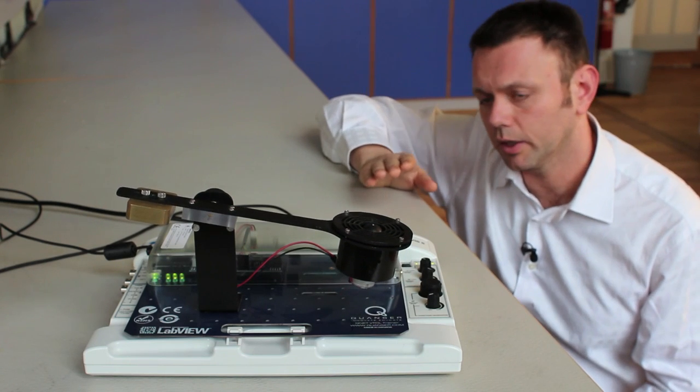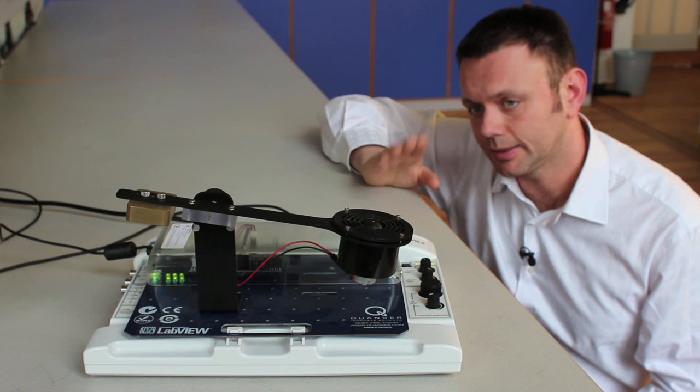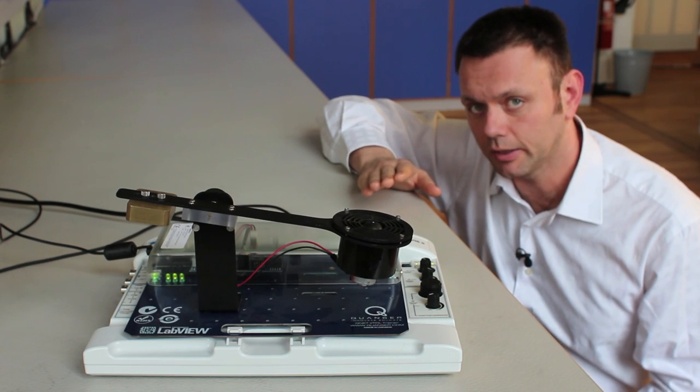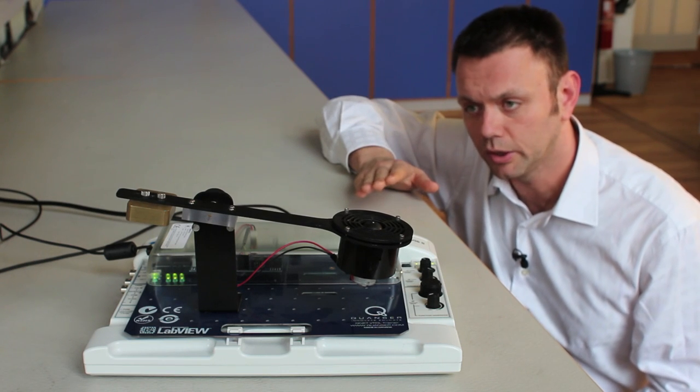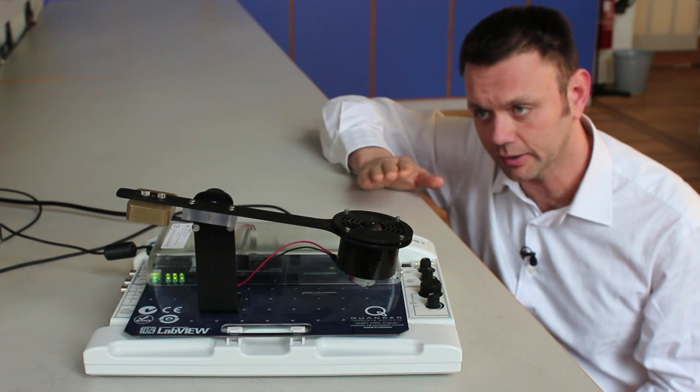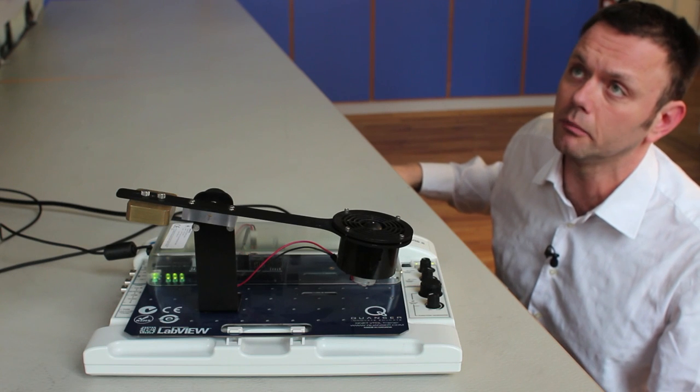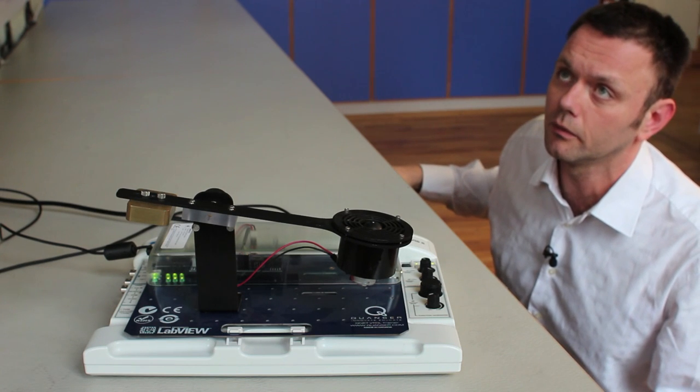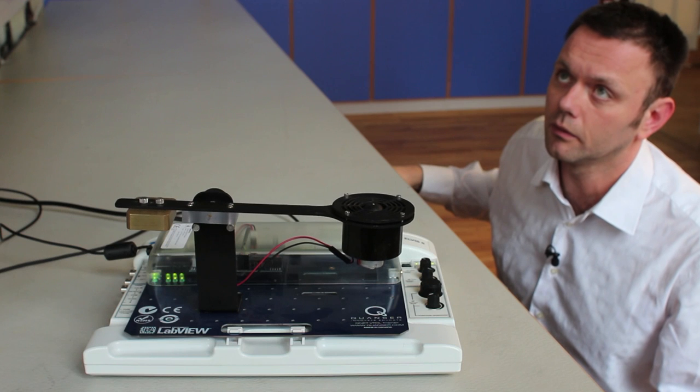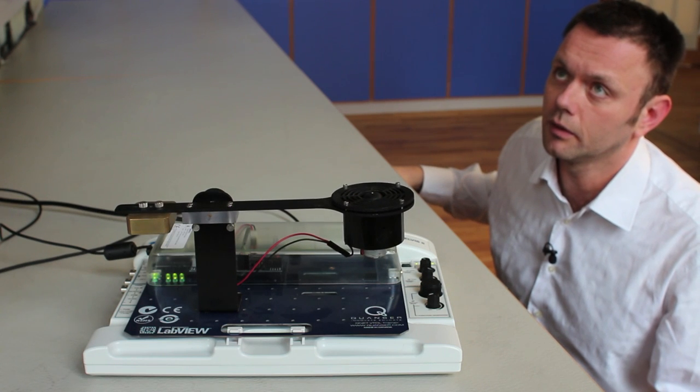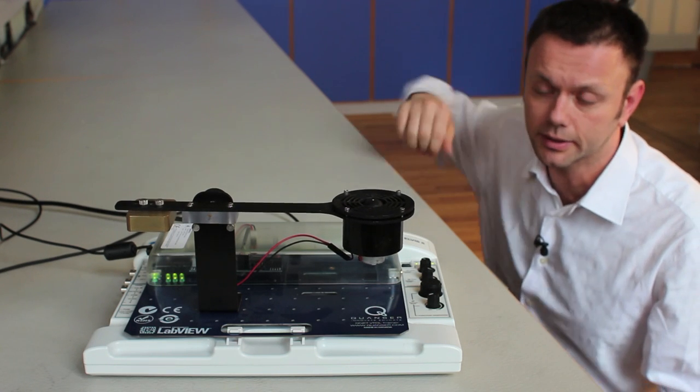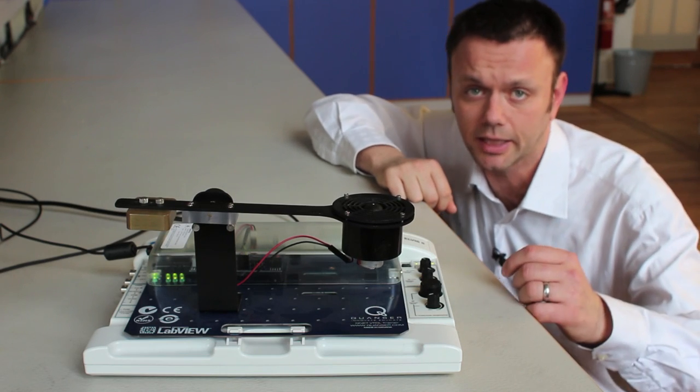So here we actually have a signal fed into the electric fan determined by the controller which is ensuring that the angle is where we want it to be. And we can electronically modify the desired angle of the beam. We are going to raise it now.